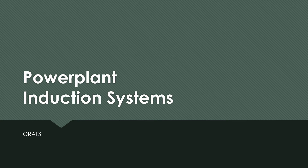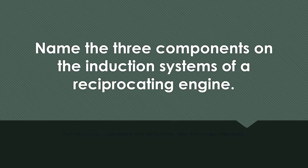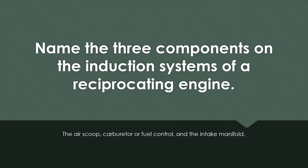Power Plant Induction Systems — Oral Questions. Name the three components on the induction systems of a reciprocating engine. The air scoop, carburetor or fuel control, and the intake manifold.